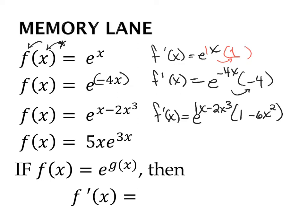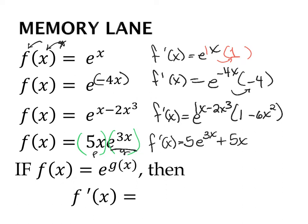Let's try this again with the next piece. Notice we have a function 5x times a function e to the 3x, which means we have a product rule — first and second. So the derivative is: the derivative of the first, which is 5, times the second, plus the first, 5x, times the derivative of the second. The derivative of e to the 3x is e to the 3x — rewrite it and chain rule out the derivative of that exponent. You could rewrite this as 5e to the 3x, plus multiply 3 times 5 to get 15x times e to the 3x. If you're using an online homework system, this simplified form is probably the one it wants.